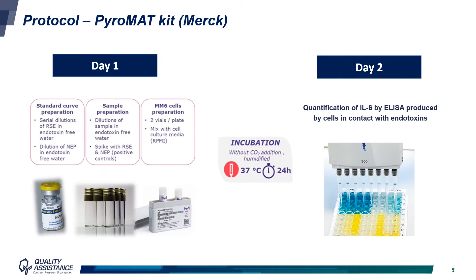In this study, we validated the monocyte activation test using a PyroMAT kit from Merck on a nanoparticle project. In terms of protocol, the experiment is divided into two days. On the first day, the standard curve and samples are prepared in endotoxin-free water and put in contact with the Mono-Mac-6 monocytic cell line. After 24 hours of culture at 37 degrees in a humidified environment and in the absence of carbon dioxide, culture supernatants are harvested and tested for IL-6 detection using an ELISA.